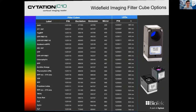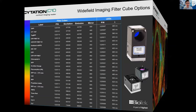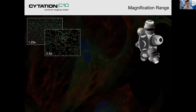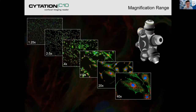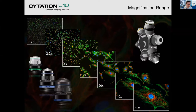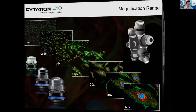Complementing that, we also have a wide range of magnification options — everything from 1.25x all the way through to 60x. You can opt for a phase option or a non-phase option with the normal objective, and these are Olympus objectives, so good quality there.